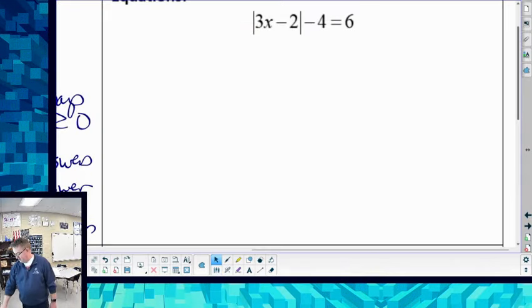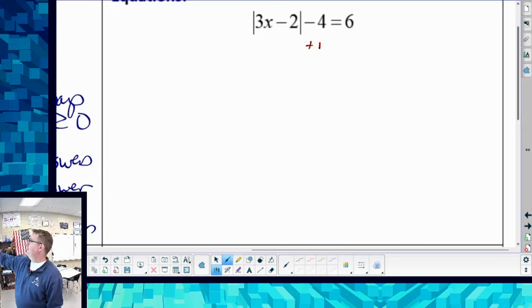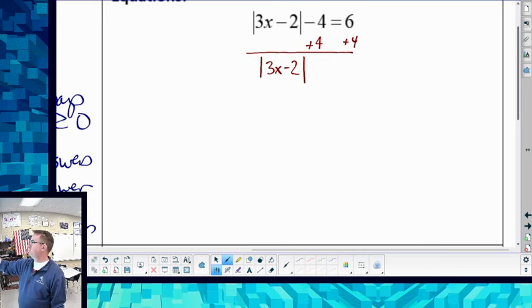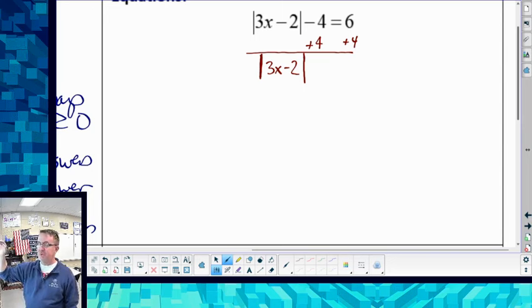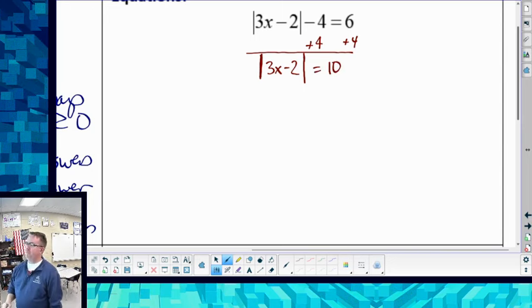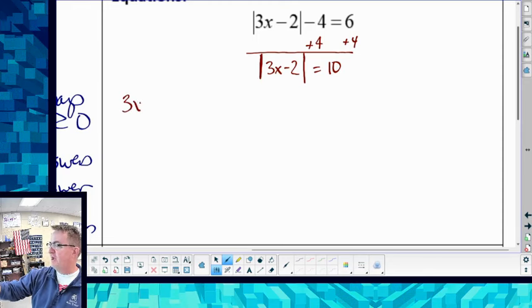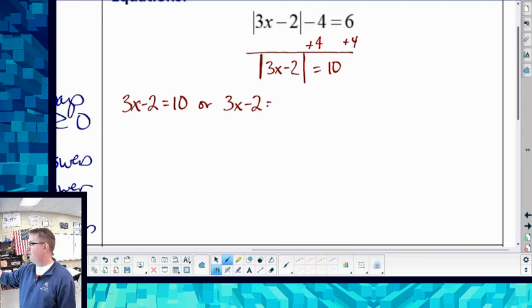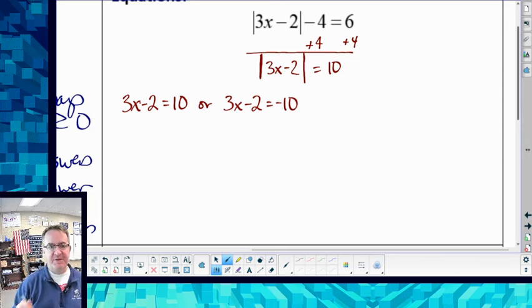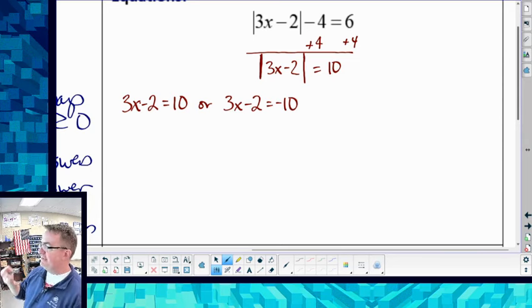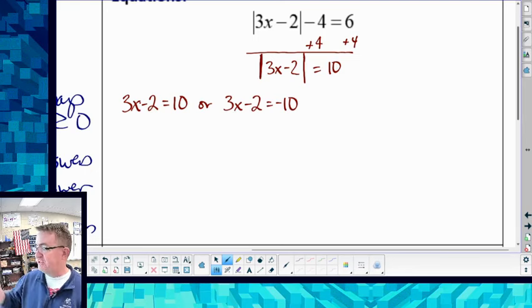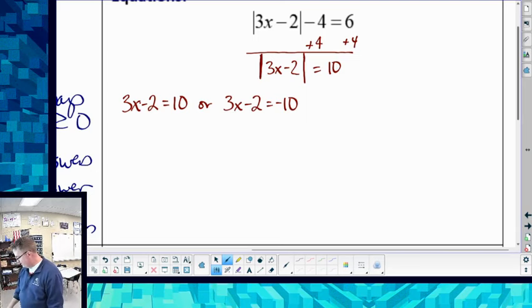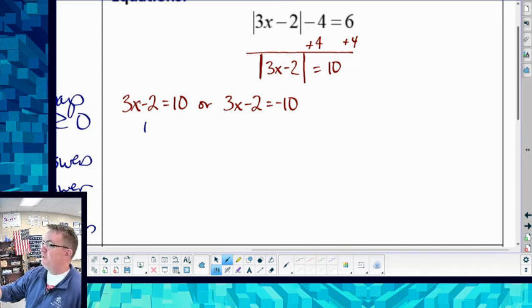I'm going to guess most of you are watching on your phones. So remember, the first process is we want to isolate the absolute value. I'm going to add four to both sides. So the absolute value of 3x minus 2, and I would make these big enough so you don't get them confused with ones, is equal to 10. So the first thing I'm going to do is I'm going to have 3x minus 2 is equal to 10, or that inside could also equal a negative 10. Now you have to set it up like this. The big mistake people make is that they forget that the absolute value on the inside can equal negatives.